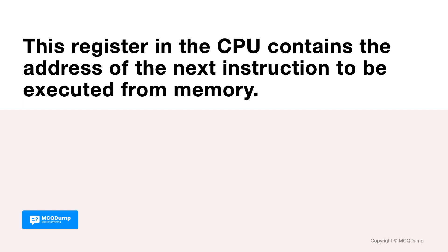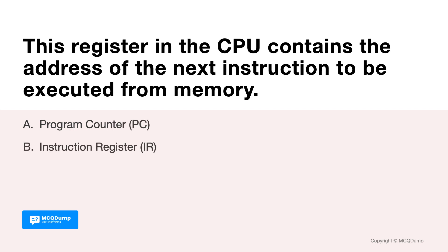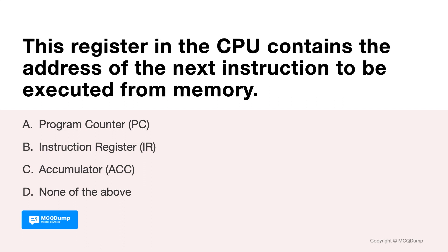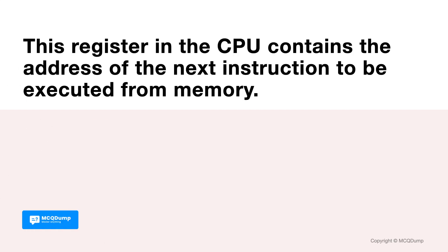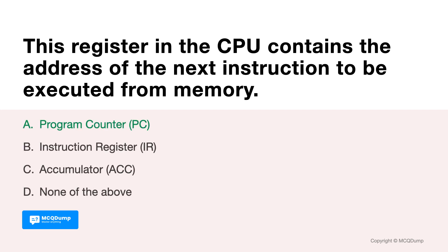This register in the CPU contains the address of the next instruction to be executed from memory. Options are: A. Program counter, B. Instruction register, C. Accumulator, and D. None of the above. Answer is A. Program counter.